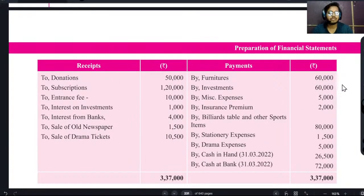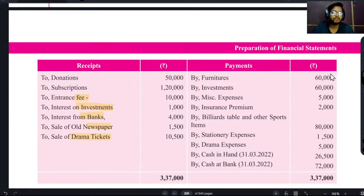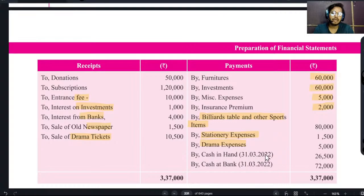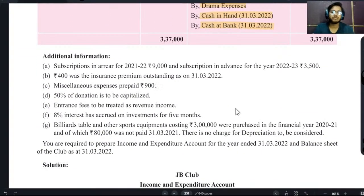Donation दे रखा है, subscription दे रखा है, entrance fee दे रखी है, interest on investment, interest from bank, sale of old newspaper, drama ticket की sale, furniture, investment, miscellaneous expense, insurance premium, bill, table and other sports items, stationery expense, drama expense, cash in hand और cash in bank दे रखे हैं। Opening और closing items दिए हैं। Additional information में कुछ important चीज़ें हैं।